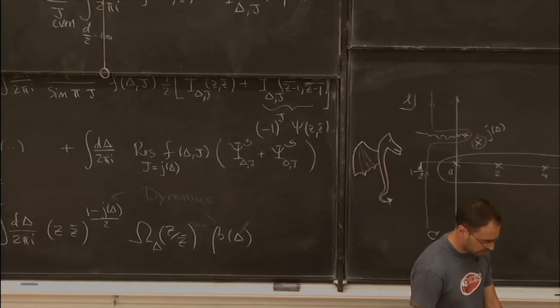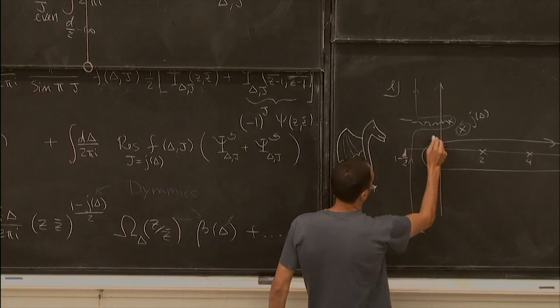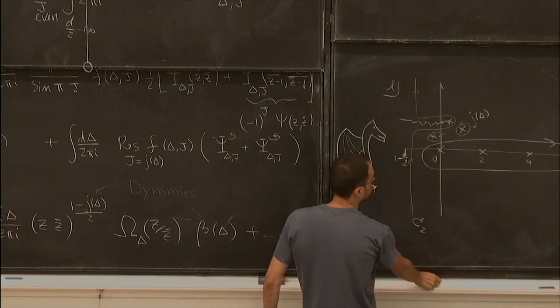Can you use the Lorentzian inversion formula to find the position of this pole? That doesn't change — it's the same thing. The pole is a pole of this function f(Δ,j), and poles of these functions are related to the spectrum. I'm assuming there is one dominant pole. If there is another pole, it's subdominant — I'm just writing the leading term.